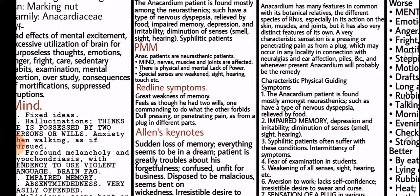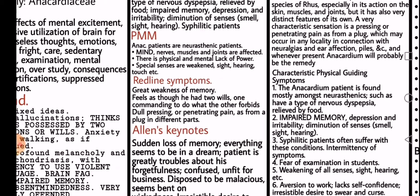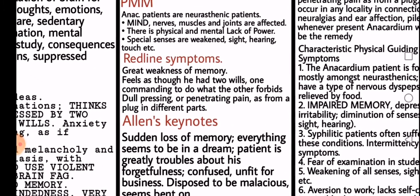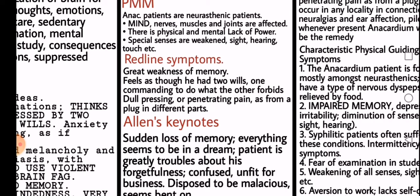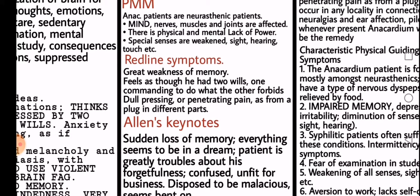From Phatak's Materia Medica, Anacardium patients are also described as neurasthenics — this point is consistently repeated. The sphere of action includes mind, nerves, muscles and joints. There is physical and mental lack of power. Special senses are weakened — sight, hearing, touch, etc. Some red line symptoms include great weakness of memory, feels as though he had two wills — one commanding to do what the other forbids — and dull pressing or penetrating pains as from a plug in different parts.